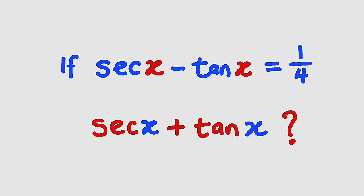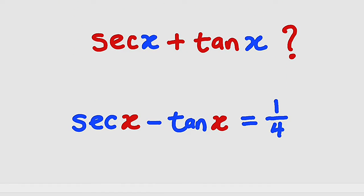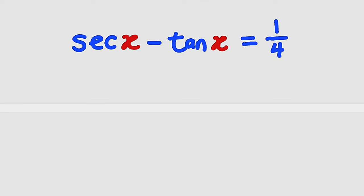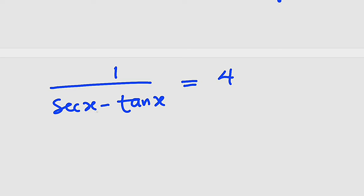Let me show you. Using the first equation, we can take the reciprocal of both sides. If you take the reciprocal of the left side, you obtain 1 divided by secant x minus tangent x, and the right side equals 4. But I know 1 divided by secant x minus tangent x is nothing but secant x plus tangent x, which equals 4. This is exactly what we are looking for.